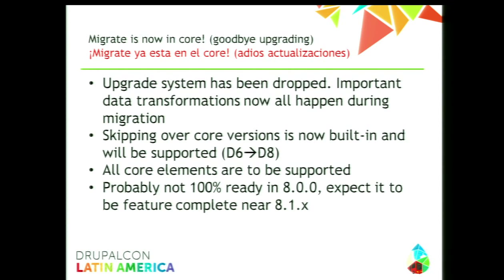There is still a plan to replicate that old upgrade.php page with all of this working magically under the hood, and that is currently flagged for the 8.1.x release. Before you say there's no migrate in core — there are actually two migrate modules in core. The migrate module that runs the migration is there, it's working, and it can be used today. And then the migrate_drupal module, which is the equivalent to migrate D2D in the old version.